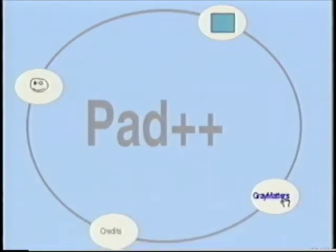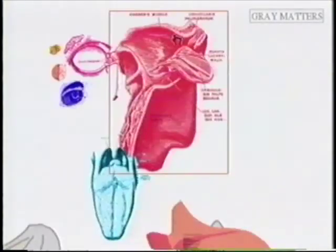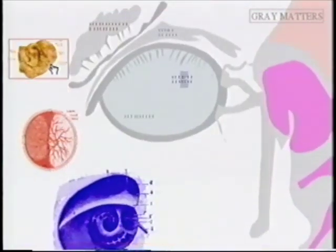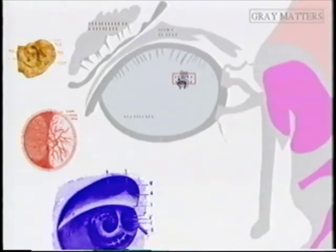Gray Matters is a hypertext fiction created by a group of writers, artists, and programmers at New York University's Media Research Lab. It is a loosely coupled fiction centered around the human body. Clicking on any body part brings you to that section of the story, while clicking in the periphery brings you out one level. This is an experiment in alternative forms of hypertext. By adding space and animated graphics to hypertext, it adds a new dimension, bringing a sense of place to the story.